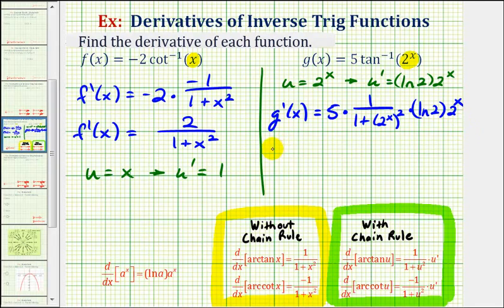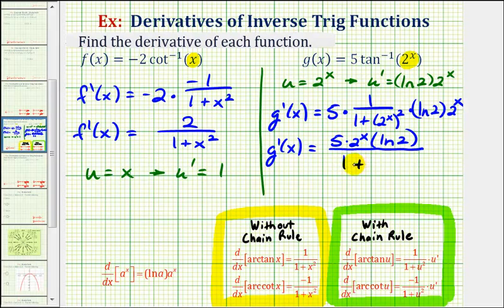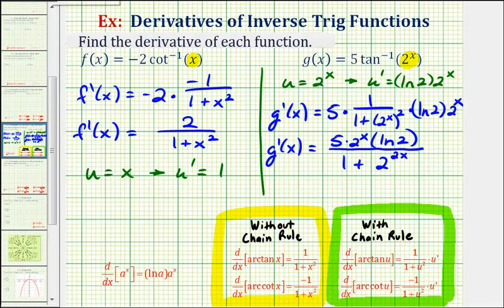Now let's go ahead and simplify this. We have g prime of x equals — the numerator is going to be five times two to the power of x times natural log two. Our denominator is going to be one plus two to the power of x squared; we're going to multiply the exponents, so we would have two to the power of two x. I do want to mention that we could express two raised to the power of two x as four to the power of x, since two to the power of two x equals two squared to the power of x, which would be four to the power of x. So we could write this as one plus four raised to the power of x if we wanted to, but we'll go ahead and leave it in this form.